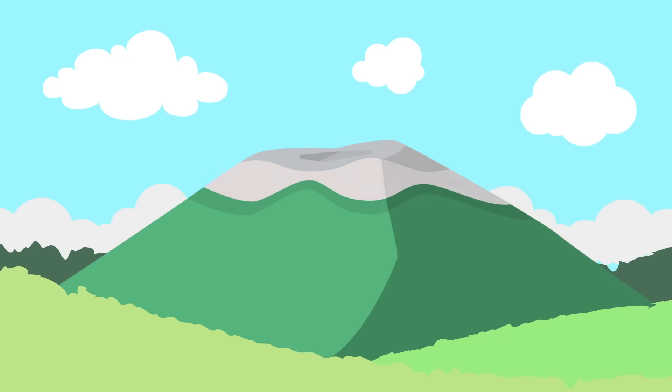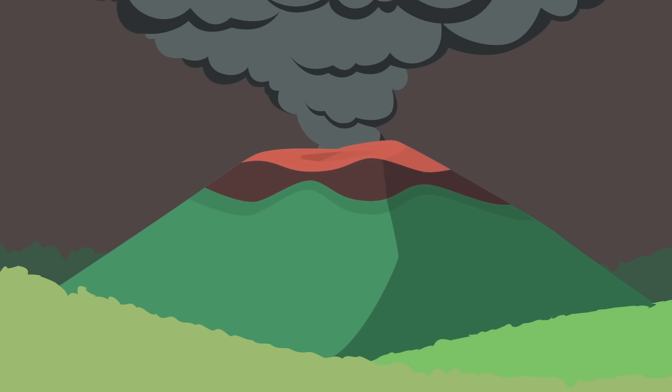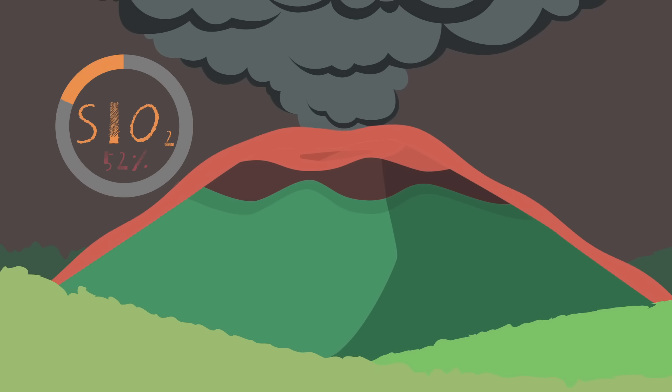The basaltic lava of Mauna Loa in Hawaii has a low gas content and flows quietly. Basaltic lava can only reach the surface if there is a crack in the earth's crust. This type of lava has a silicon dioxide content of 52% or less, making it highly fluid with a low viscosity.